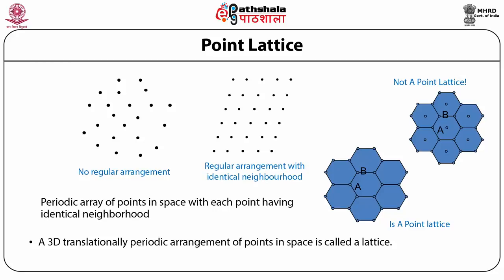Let us take some more examples. On the extreme right hand side on the top, the arrangement is not a point lattice because it is not periodic and the points do not have identical neighbors. Whereas on the bottom right hand side, the arrangement is a point lattice where all the points are identical. Similarly, a 3D translationally periodic arrangement of points in space is called a lattice.